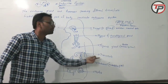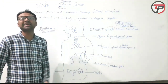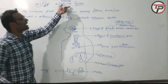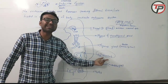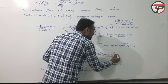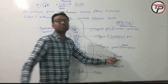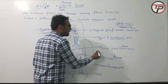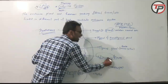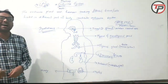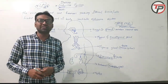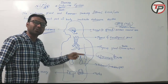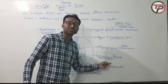The pancreas gland acts as both an endocrine gland and an exocrine gland. The pancreas is called an exoendocrine gland. As per GPAT exam questions, when asked which gland in our body is called an exoendocrine gland, the answer is the pancreas.